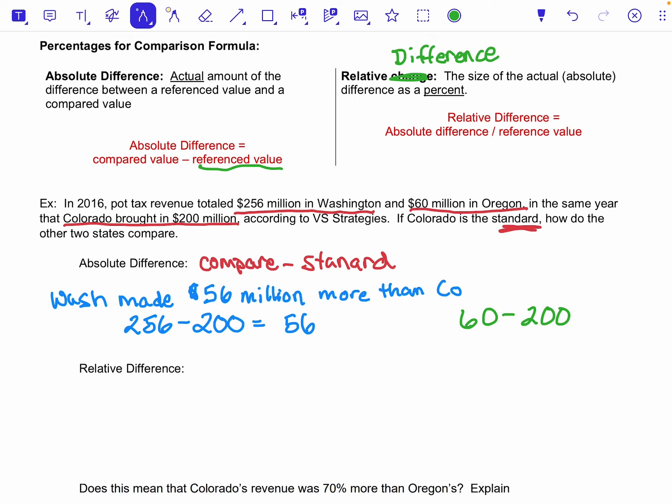And this time I would get negative 140. Remember I said signs matter, and so what this is telling me right here is that Colorado made $140 million less than Colorado.